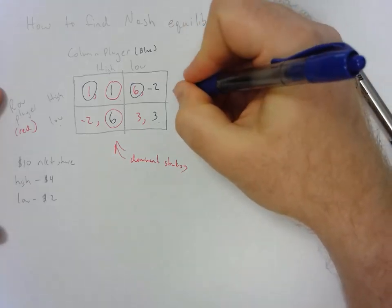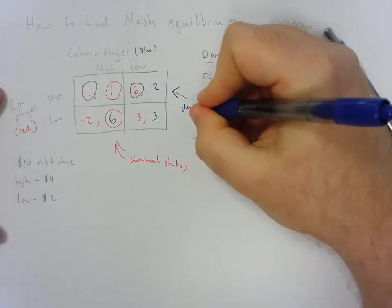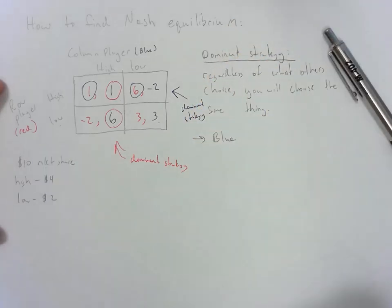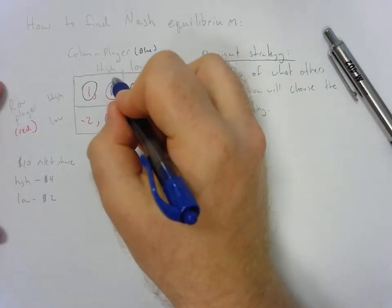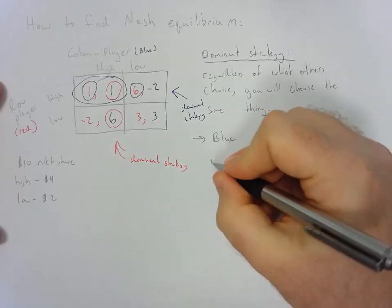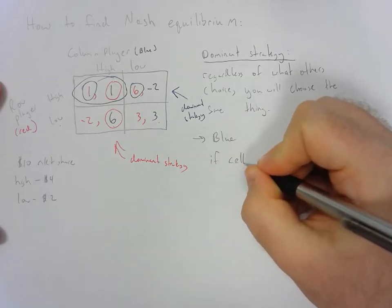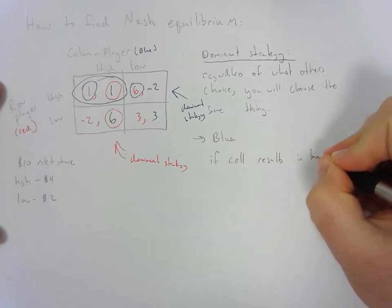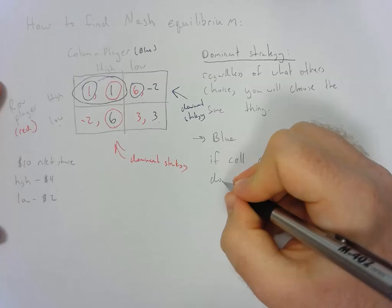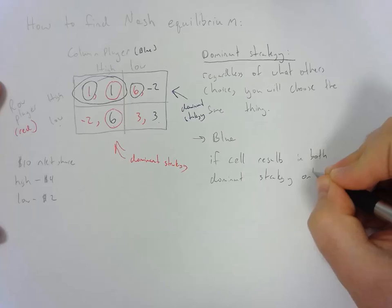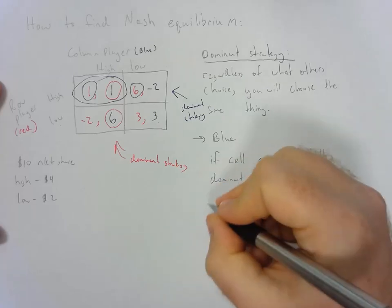So we can see here that high is also a dominant strategy for the row player. So what ends up happening in this case is we see that this cell right here, if one cell results in both dominant strategy outcomes, it is a Nash equilibrium.